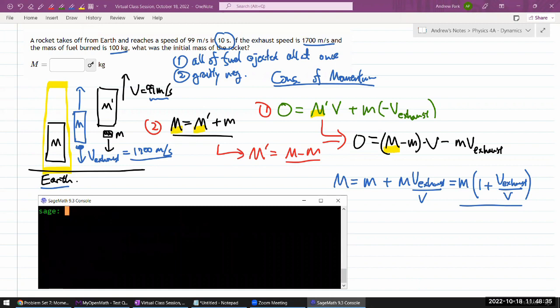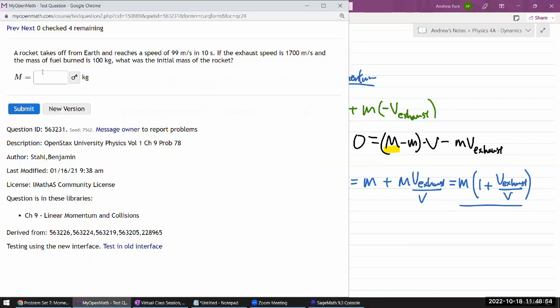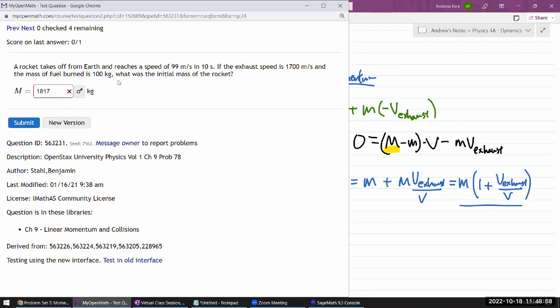That is small m times one plus this ratio of exhaust per speed of the rocket. So let me plug in the numbers based on this, and see if the system says it's correct. Mass of fuel burned times one plus the ratio of exhaust, 1700 to the speed of the rocket. 1817 is what the answer is here, let me put that in and see if it says that's correct.